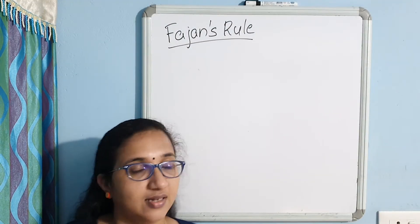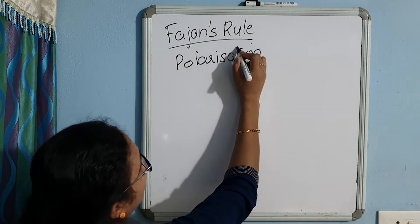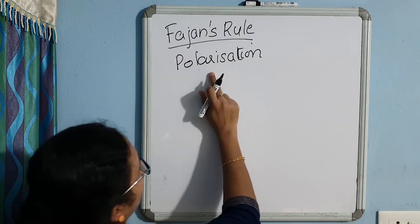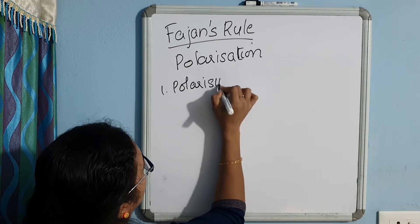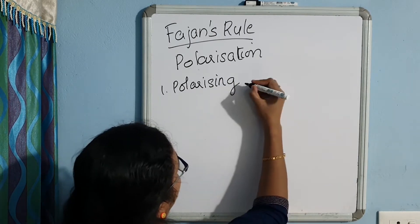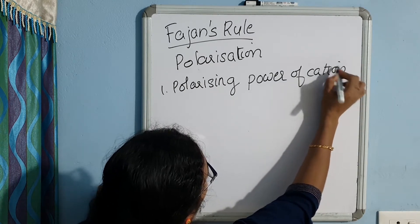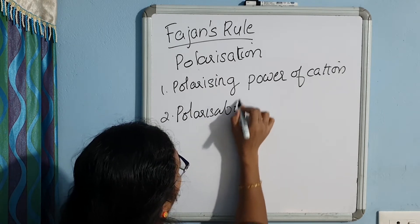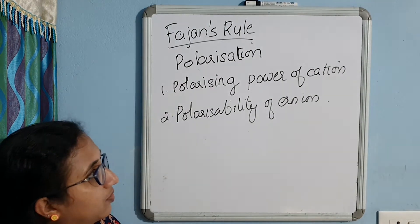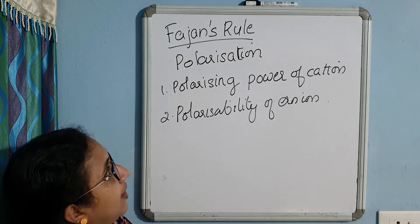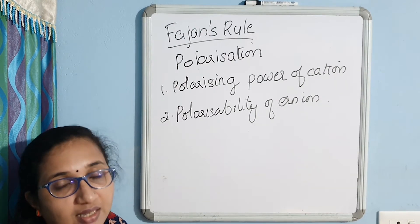This distortion is otherwise called polarization. Polarization of an ionic bond results in covalent character. As per Fajan's Rule, polarization depends on two factors: the polarizing power of the cation and the polarizability of the anion. Higher the polarizing power of the cation and higher the polarizability of the anion, more will be the covalent character of the ionic bonding.